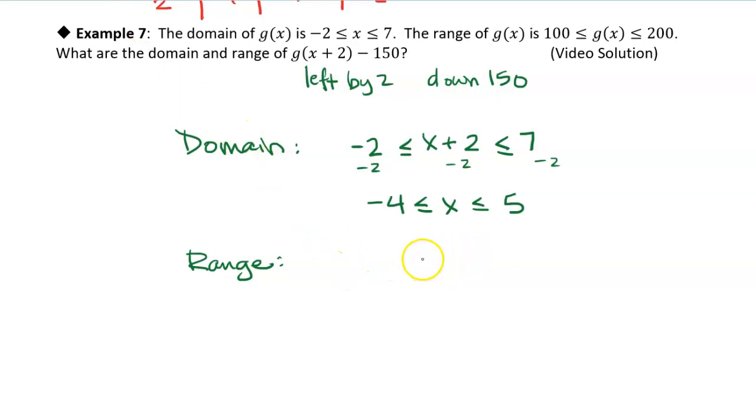Alright, so we have g of x plus 2 minus 150, and it's going to be between some values. And so we know that the output of g of x is between 100 and 200.